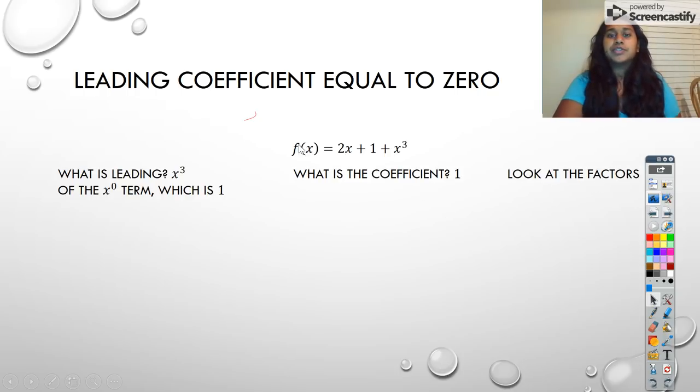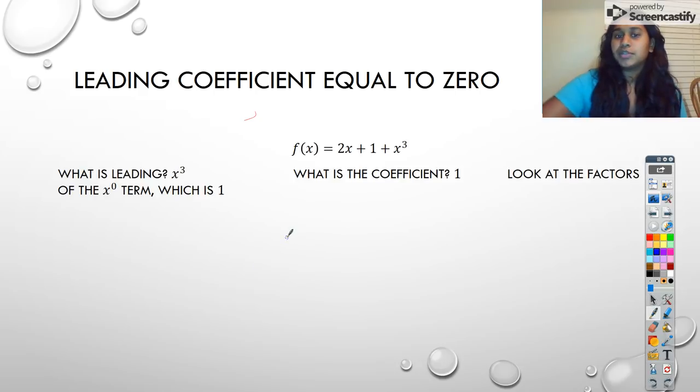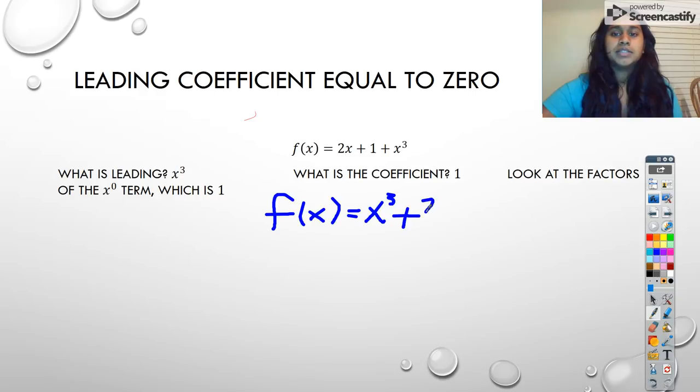I look at the factors. So real quick, I'm going to take a moment and write down the reorder of this function so that we can actually see what that looks like. This is f(x) = x³ + 2x + 1. Now you can see this was our leading term, its coefficient is 1, and this is that x to the 0 term.